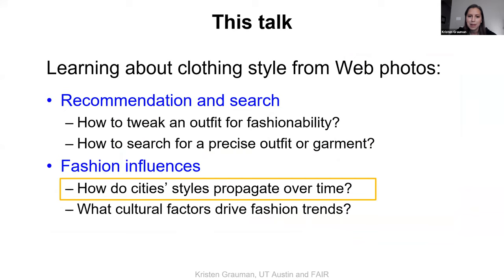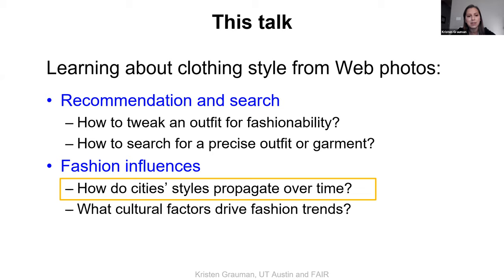So far I've concentrated on individual cases where a user is trying to find something or get a recommendation. In the remaining part of the talk, I want to shift gears from the individual to the world stage — thinking about fashion properties across large-scale image data of many people all over the world, and what we can learn from those. In particular, I want to center this around the notion of influence: propagating influence over time and over space.